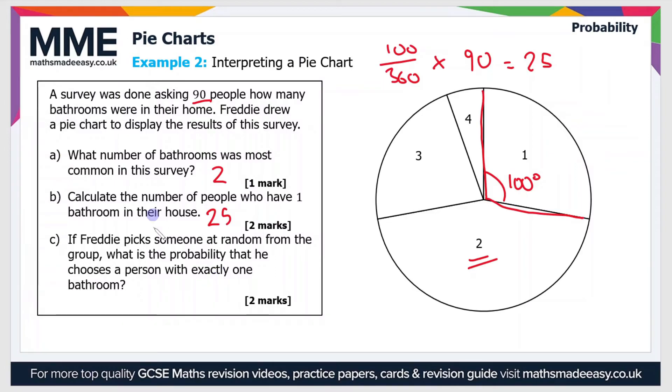So the final part then, part C: If Freddie picks someone at random from the group what is the probability that he chooses a person with exactly one bathroom? So that probability is 100 divided by 360 since that's the proportion of the circle pie chart that's taken up by people in that category.